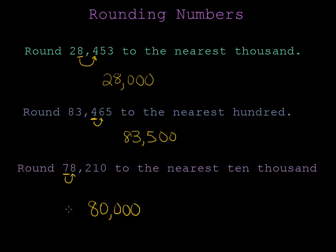I would recommend that you always underline the place that you are rounding to and then draw an arrow to the next digit, to remind you which digit will help you decide what to do and how to round your number. Thank you.